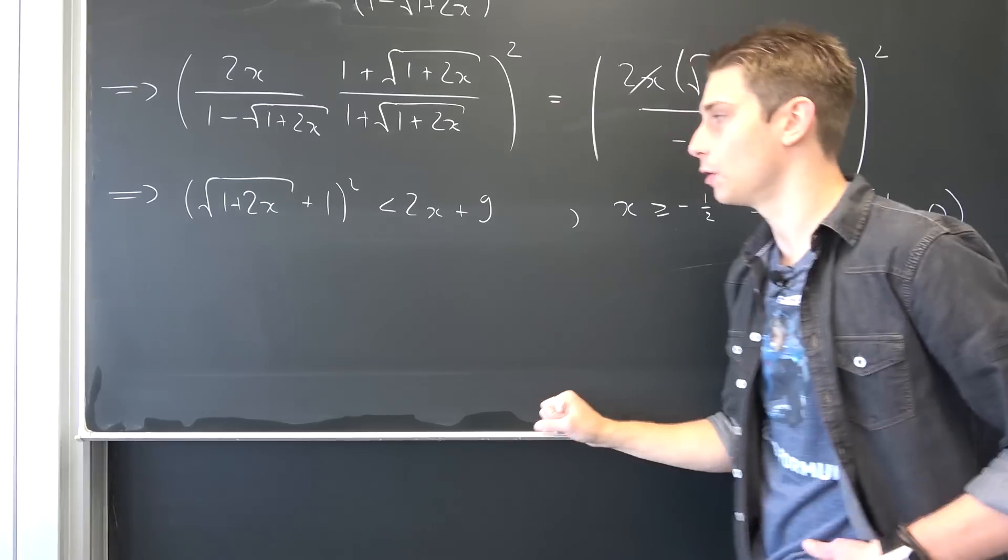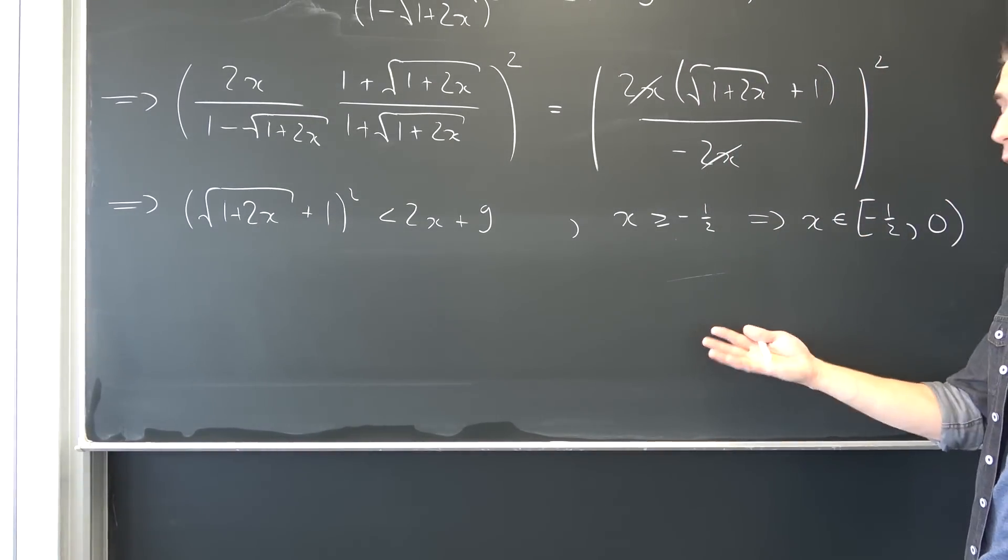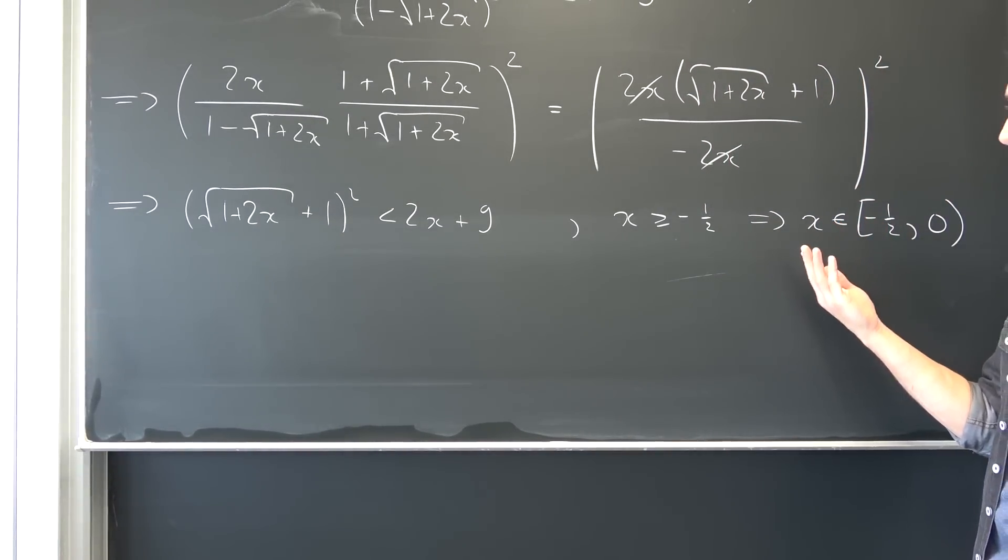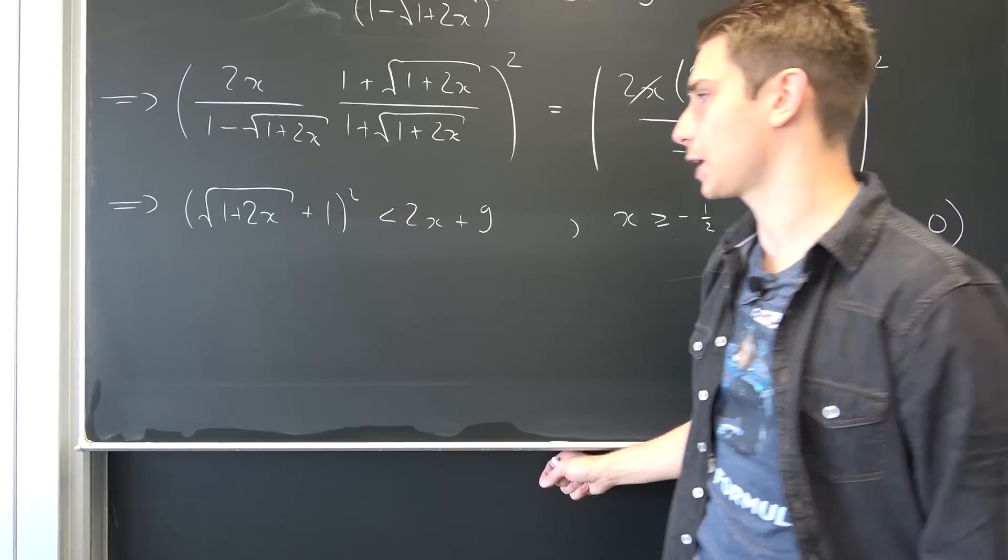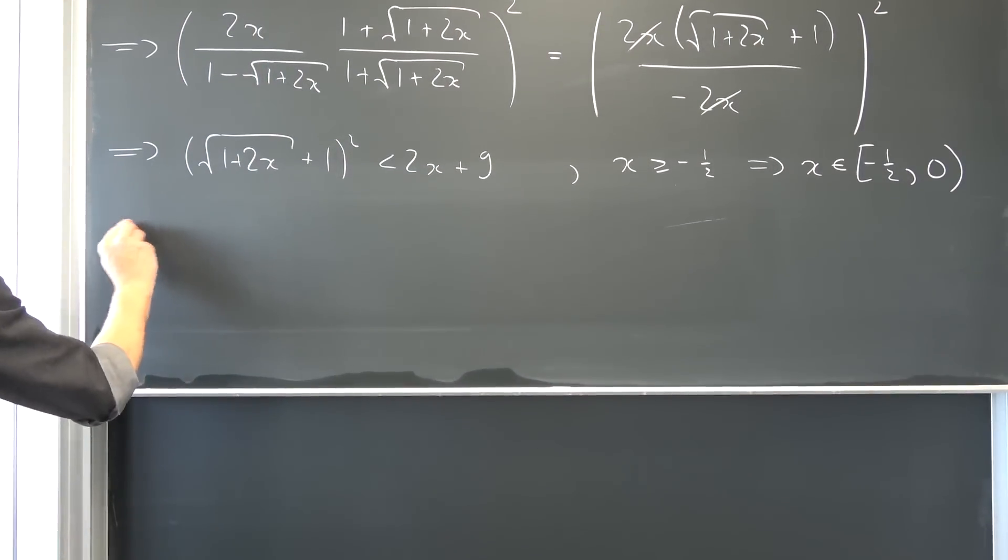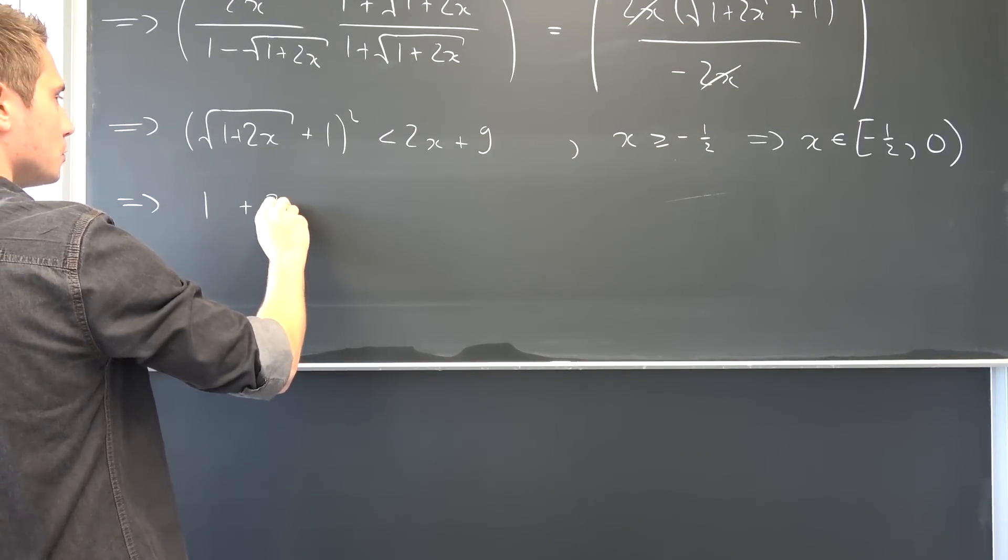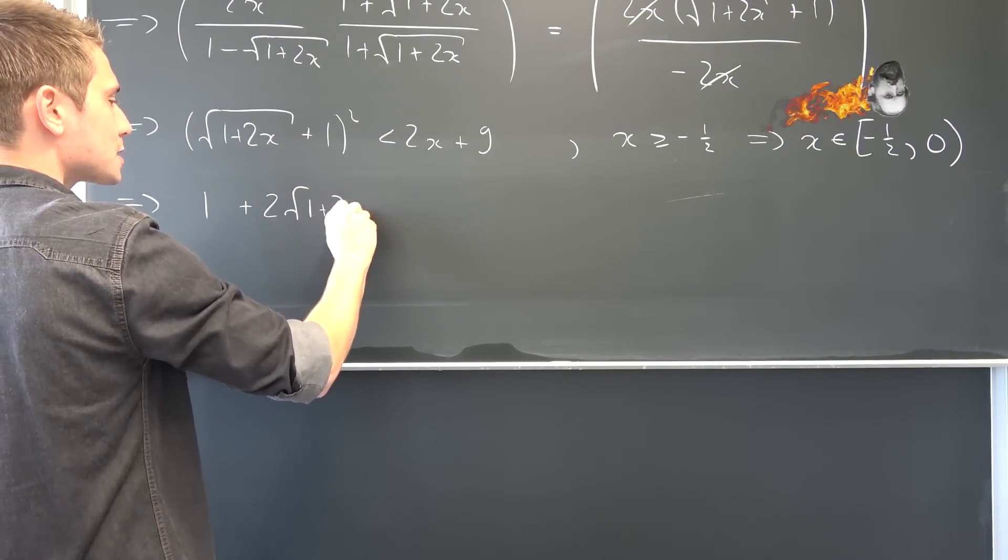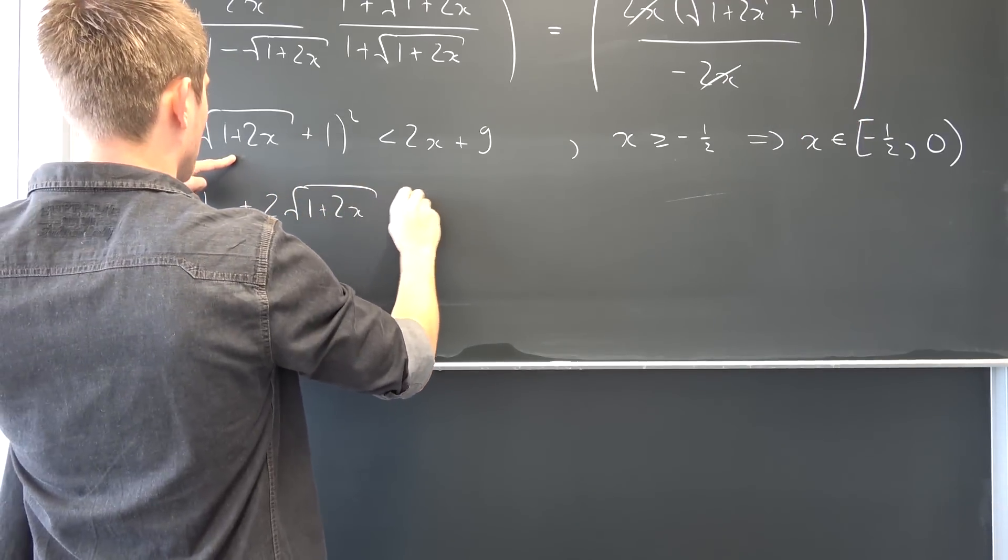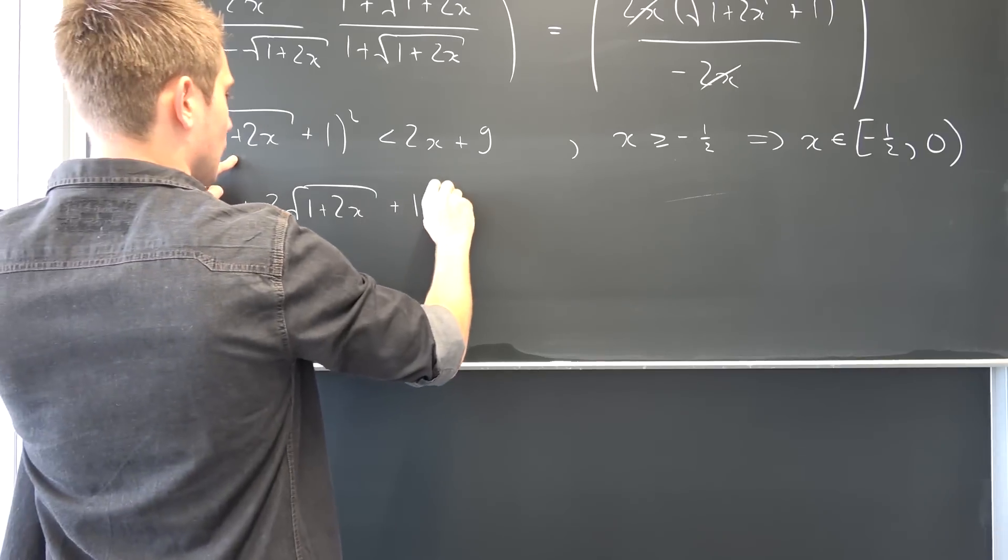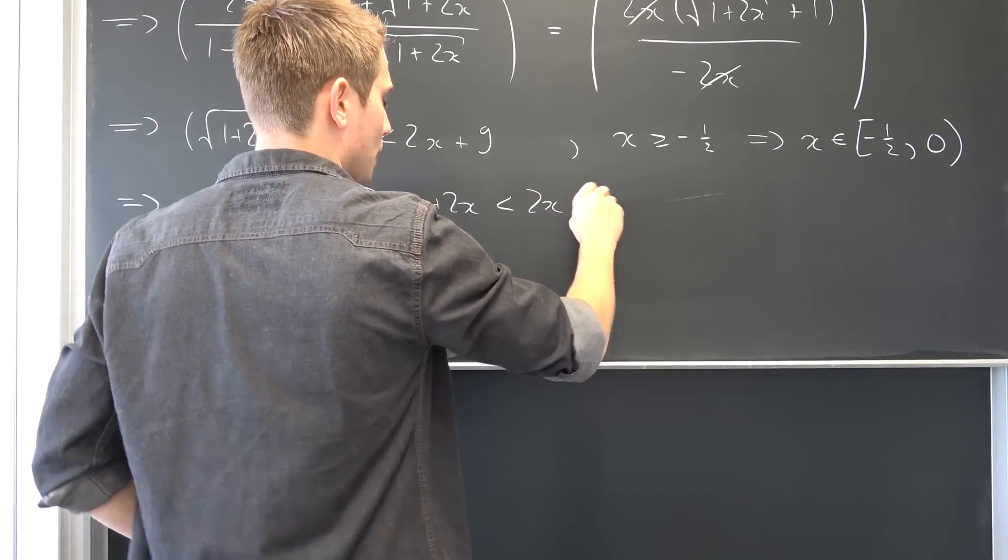Now we can go further. We want to find out if there are also solutions in the positive reals. We are going to try it out, meaning we are going to write everything out right here, leaving us with this is going to give us 1 plus 2 times square root of 1 plus 2x, and then this thing squared so plus 1 plus 2 times x being strictly less than 2x plus 9.